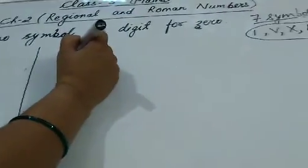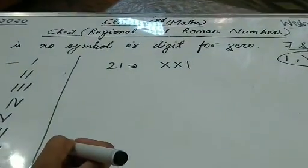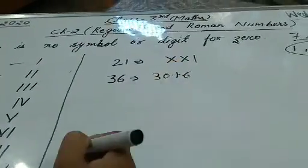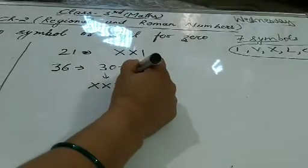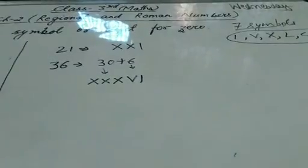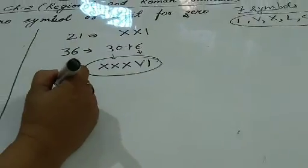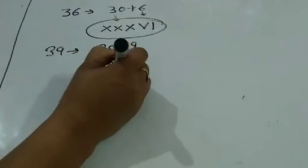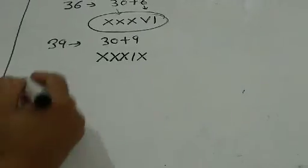Now 15 तक आप कर चुके हो. For example, 21 लिखना है तो: XX plus I — that is XXI. Now 36: 36 means 30 plus 6. 30 को लिखते हैं XXX. And 6 is 5 plus 1, so VI. This is 36 = XXXVI. Now 39: 39 means 30 plus 9. 30 is XXX, and 9 is 10 minus 1 = IX. So 39 is XXXIX.